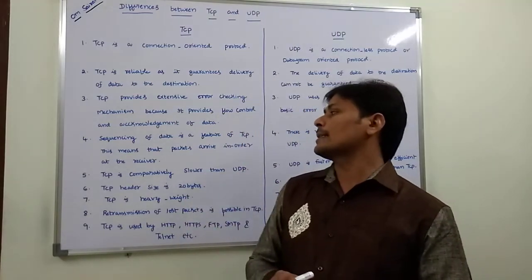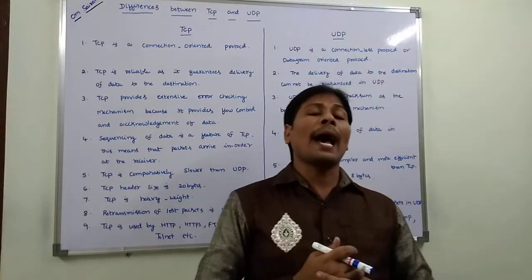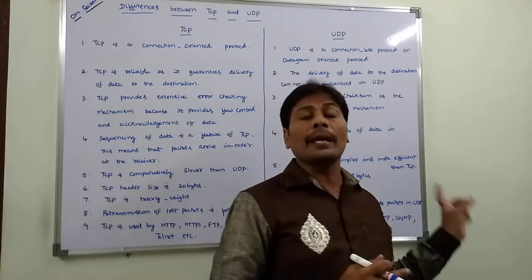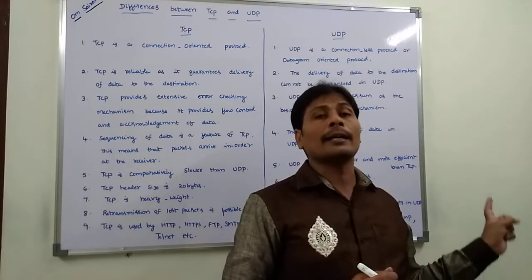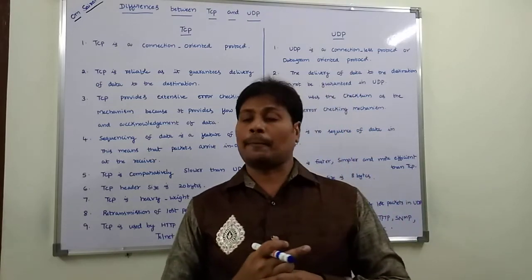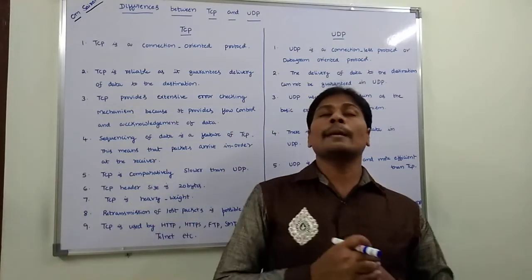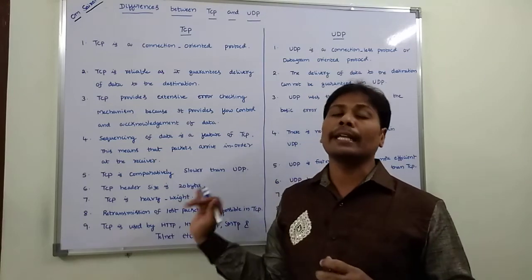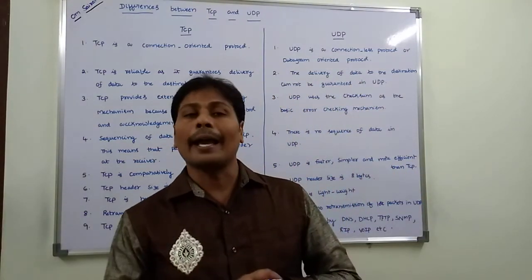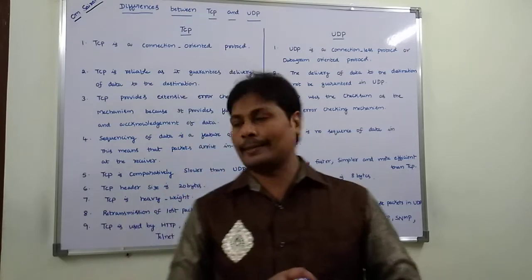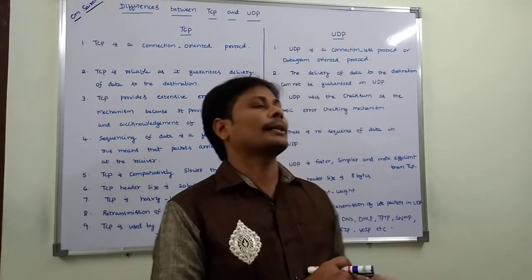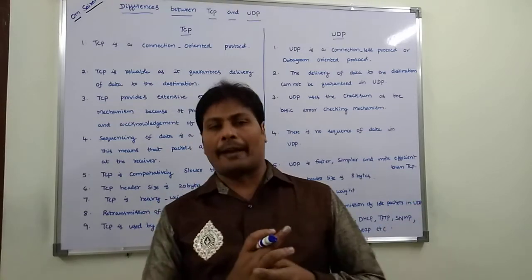TCP is comparatively slower than UDP. But UDP is simple, faster, and more efficient than TCP. TCP header size is 20 bytes, but in the case of UDP, the header size is 8 bytes. TCP is heavyweight, but UDP is lightweight.